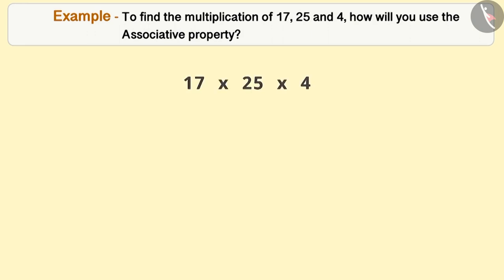If we observe the numbers carefully, we can say that 25 and 4 can be multiplied very easily. Therefore, under the associative property, we can group the numbers like this.